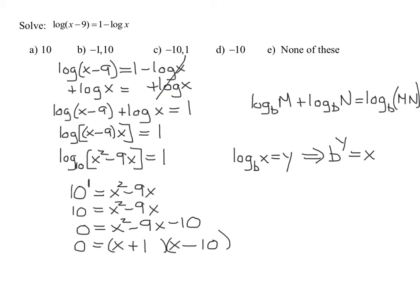Two numbers that multiply to negative 10 and add to negative 9—I think that has to be negative 10 and positive 1. You can quickly check it by foiling: x squared, negative 10x plus 1x is negative 9x, and negative 10. Two factors multiplied together equals 0.